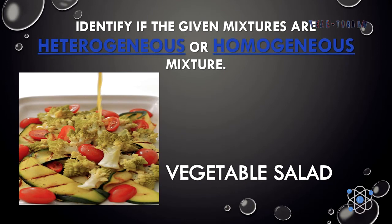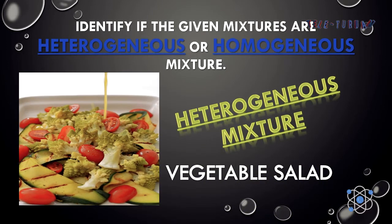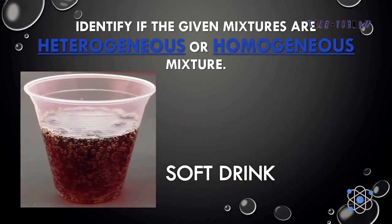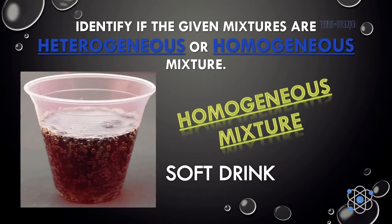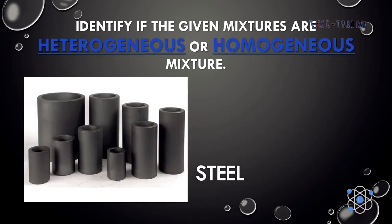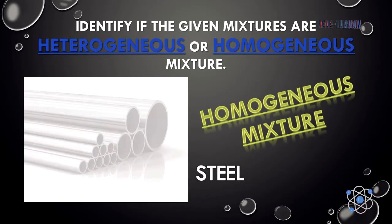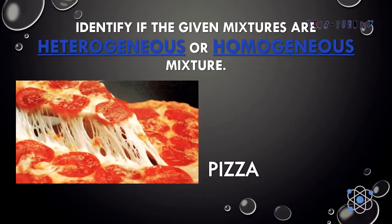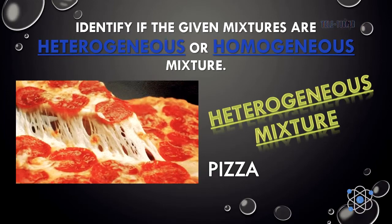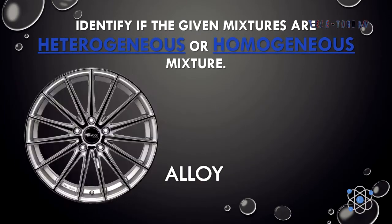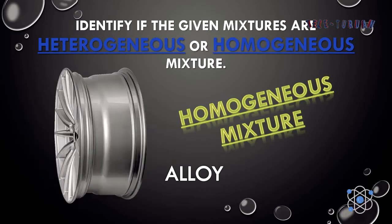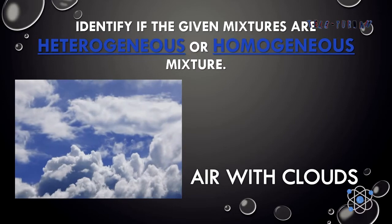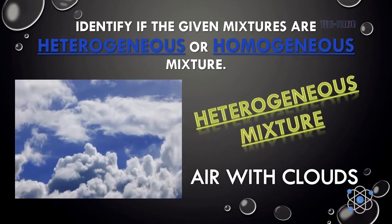Vegetable salad — vegetable salad is a heterogeneous mixture. Soft drinks — soft drinks is a homogeneous mixture. Steel — homogeneous mixture. Pizza — a pizza is a heterogeneous mixture. An alloy — that's right, an alloy is a homogeneous mixture. Air with clouds — heterogeneous mixture.